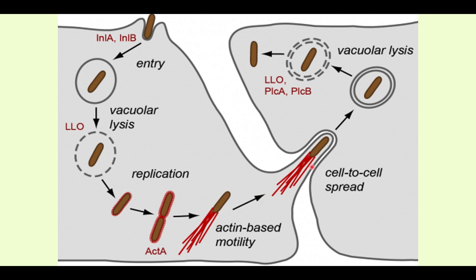Another key virulence factor is that Listeria can go from cell to cell. By doing so instead of exiting the cell each time, it can avoid humoral immunity — namely antibodies. This cell-to-cell spread is an important mechanism for immune evasion.